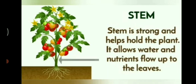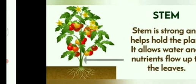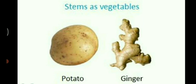Stem helps water and nutrients flow up to the leaves. Here are the pictures of stem like potato, ginger. These are stems which we eat as vegetables.